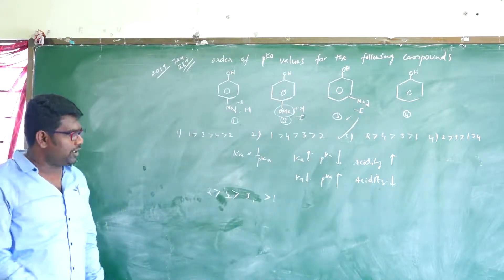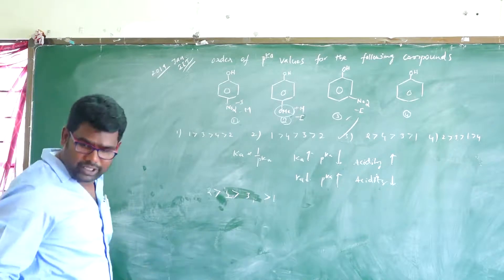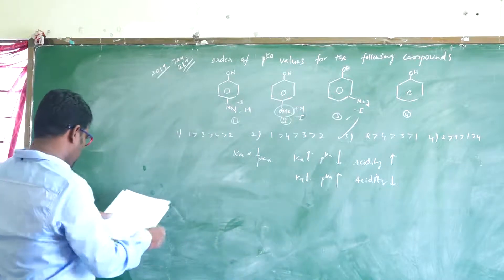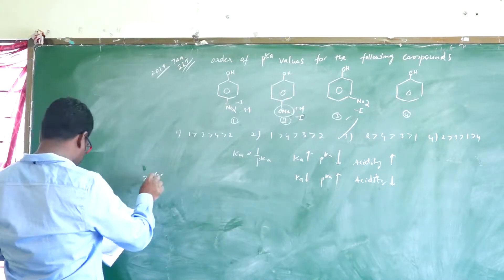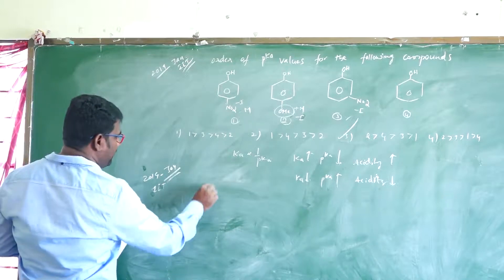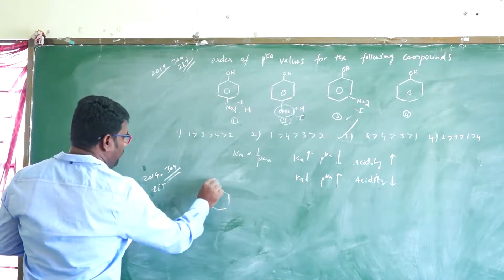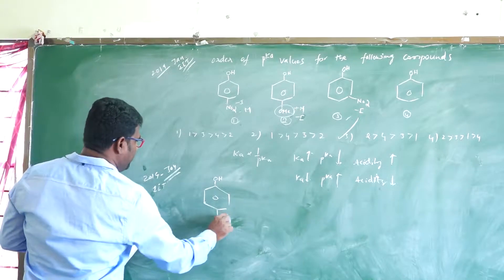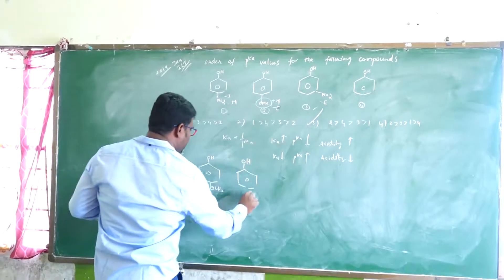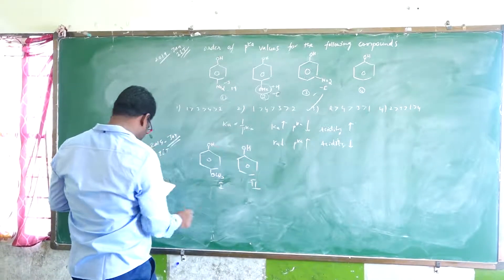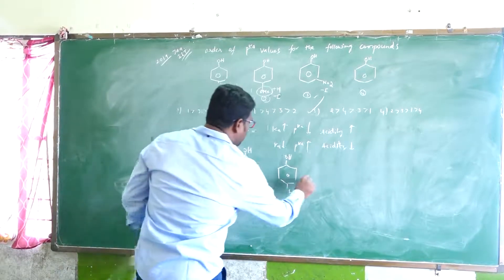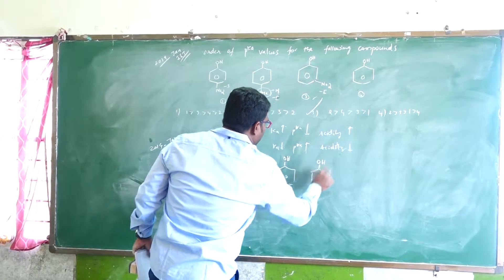Our next question is from the same 2019 IIT JEE, but a different shift — I think the third shift. The compounds here are: phenol with OH, phenol with CH3, phenol with OH as the second compound, and the first one. Next are phenol with OH and Cl, and phenol with OH and NO2.